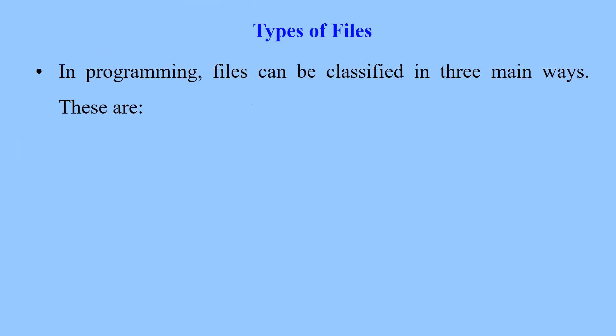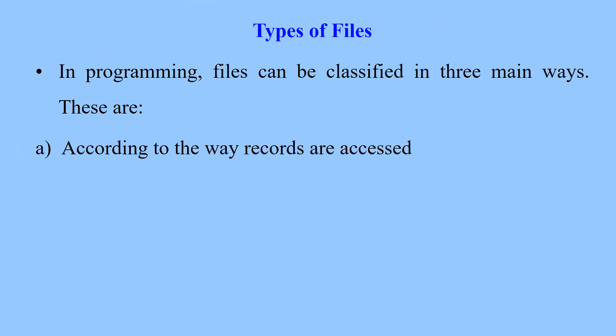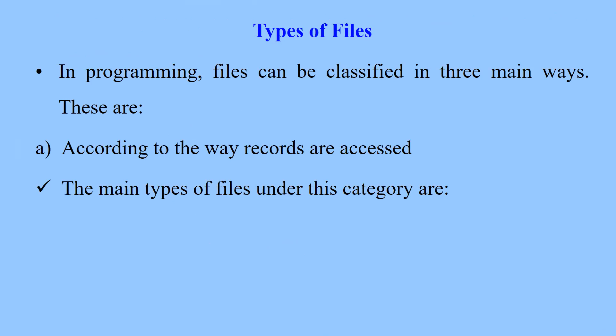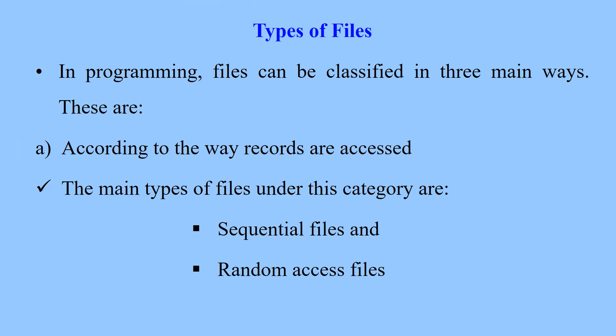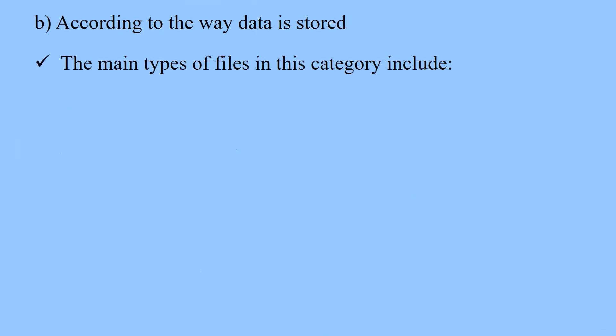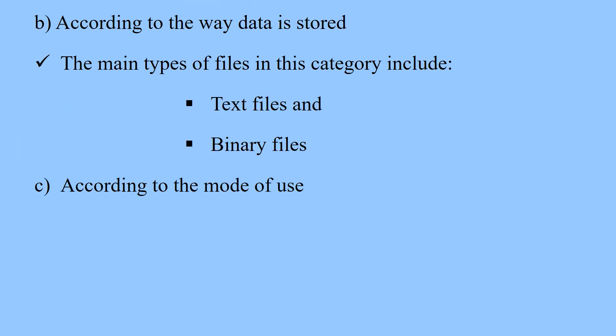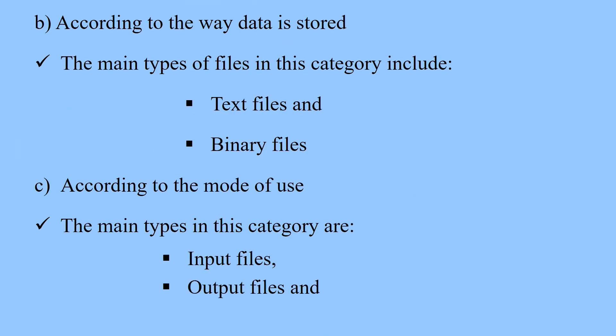Let's look at the types of files. In programming, files can be classified in three main ways. These are: according to the way records are accessed — under this category we have sequential files and random access files; according to the way data is stored — the main types include text files and binary files; and according to the mode of use — the main types are input files, output files, and input-output files.